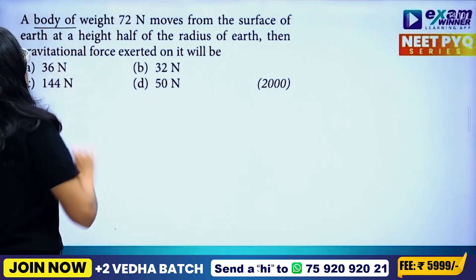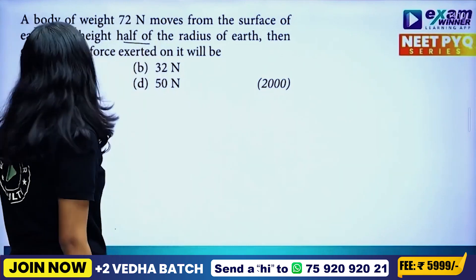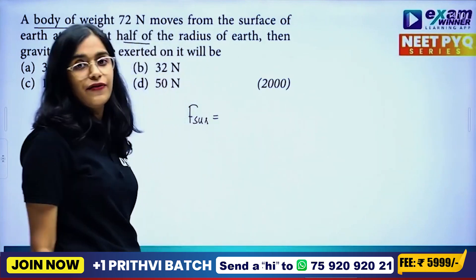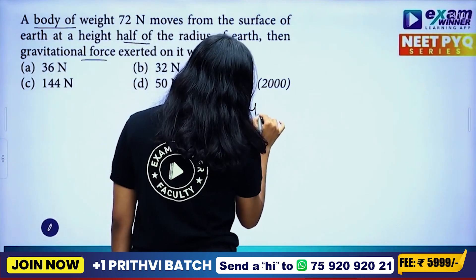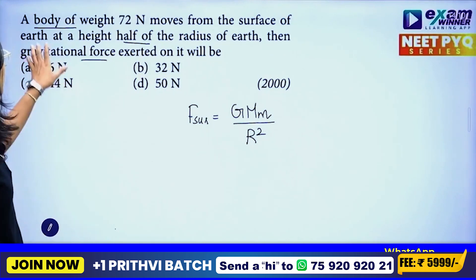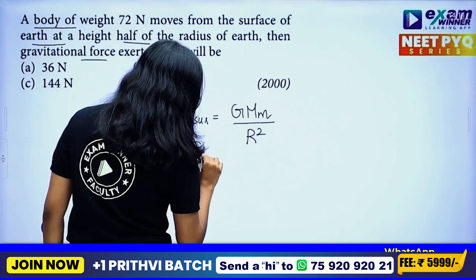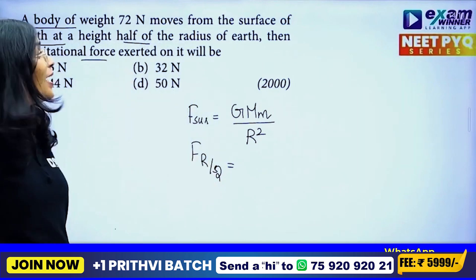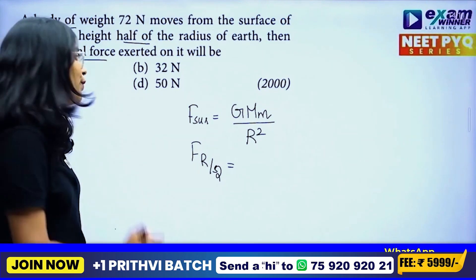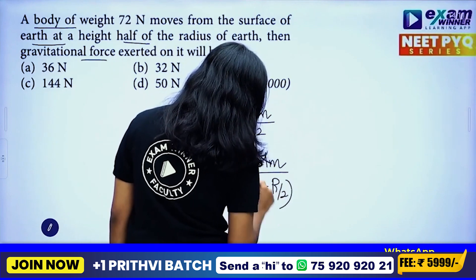The gravitational force exerted on it will be F at surface. Gravitational force at surface equals G capital M small m divided by R squared. A body moves from the surface of the earth to a height equal to half the radius of the earth, that is h equals R by 2. Then the gravitational force is G capital M small m divided by R plus R by 2, whole squared.